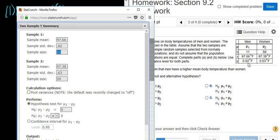0.59. Okay, everything looks okay. Let me just check. 97.66, 0.82, 11. Yep, looks good. Sample mean, that's our x bar, 97.38. Sample standard deviation, yep, yep. All right, sample size is 59. Many more women in this study. Interesting, right? 59 women and 11 men. It's kind of interesting.